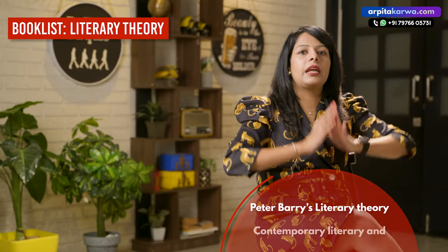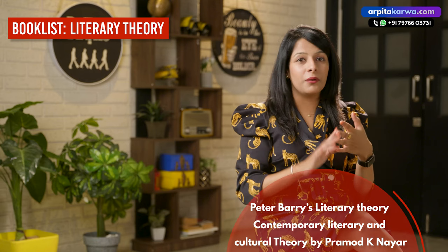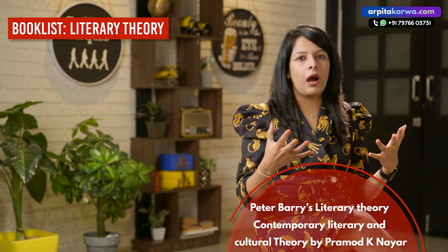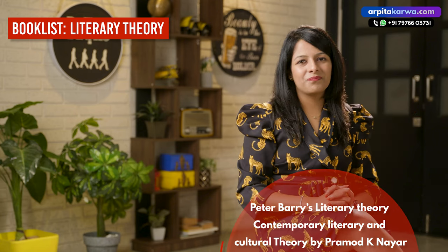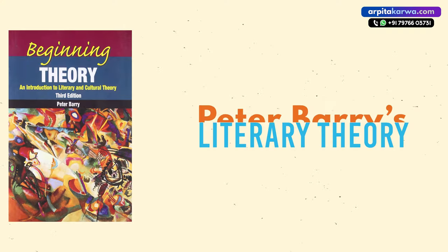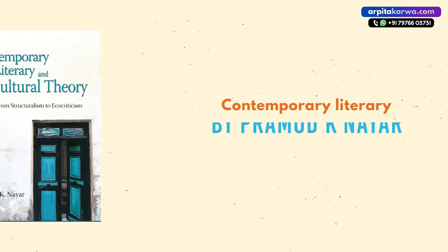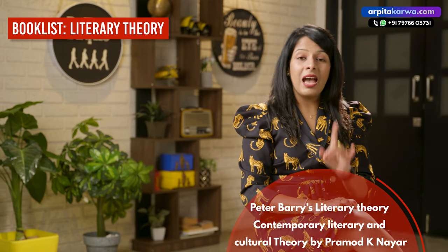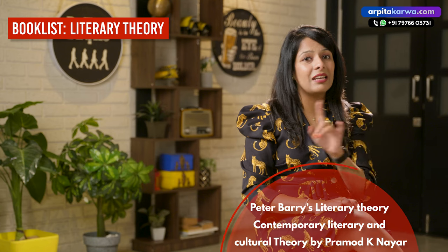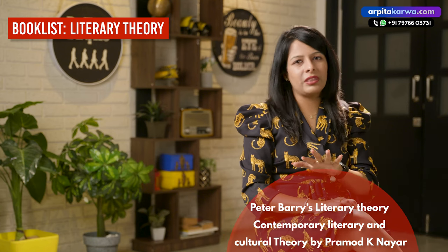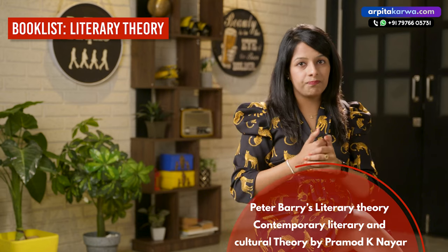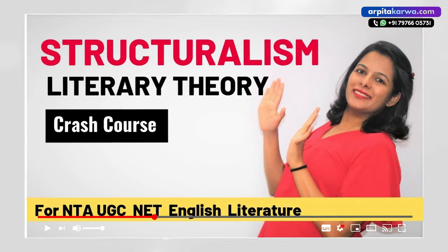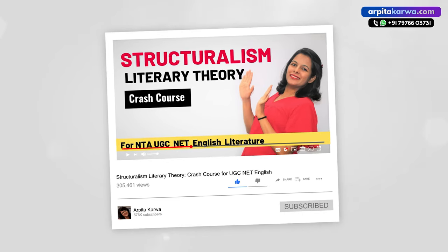After completing the entire literature — British, American, post-colonial, European, and Indian — let's talk about Literary Theory. For Literary Theory, there are two books: one is Peter Barry, and the other is Contemporary Literary and Cultural Theory by Pramod K. Nair. These two books are very simple. However, if you didn't study Literary Theory in your bachelor's, I don't recommend jumping directly to these books. In that case, check out videos on YouTube on Literary Theory first to get a basic understanding, and then go ahead and study from those books.